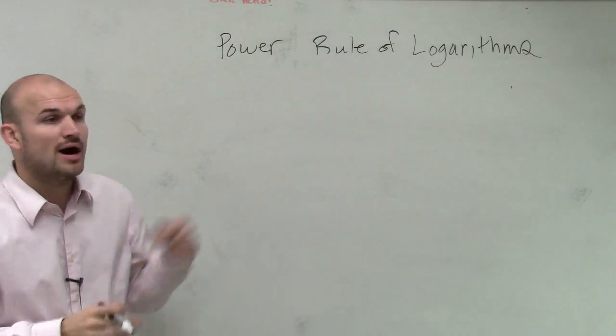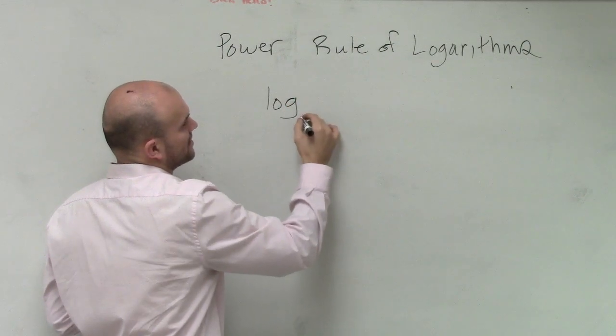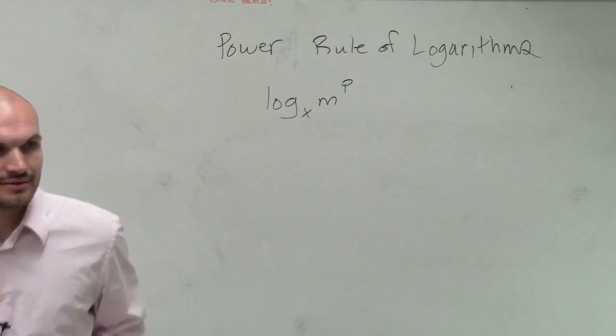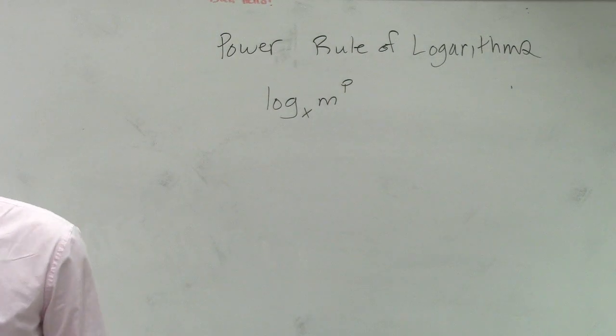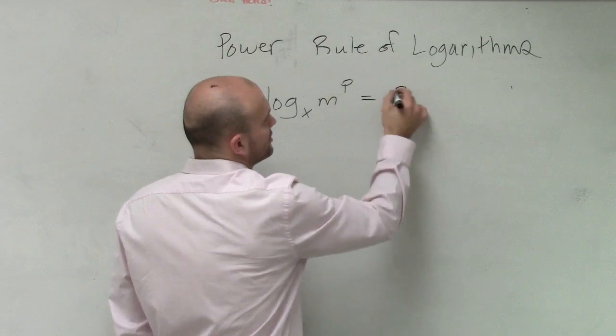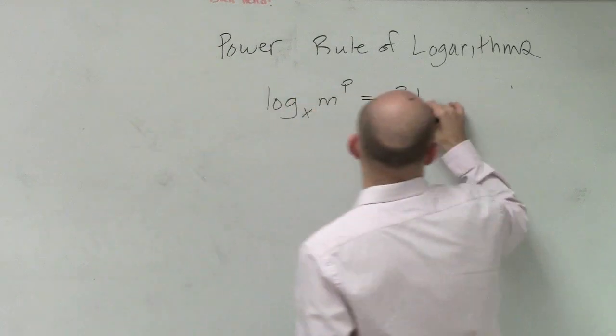So for the power rule of logarithms, if I'm given a logarithm of log base x of m raised to the p power, then what I can do is this is going to be equivalent to multiplying my exponent times my logarithm.